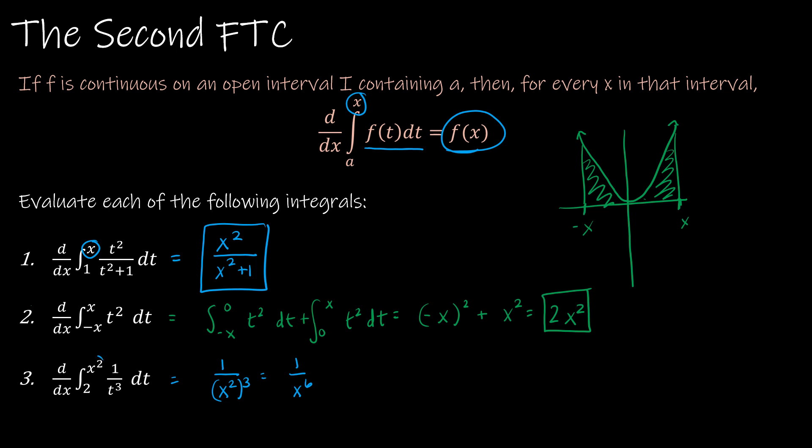Except we are taking the derivative, and remember with the chain rule, when we have a function that has a derivative, we have to, in fact, multiply it by the derivative. So this is almost right, but I also have to take it times the derivative of X squared, which, of course, is 2X. So this is 1 over X to the 6th, and then I'm going to multiply by 2X, so this actually ends up being 2 over X to the 5th.